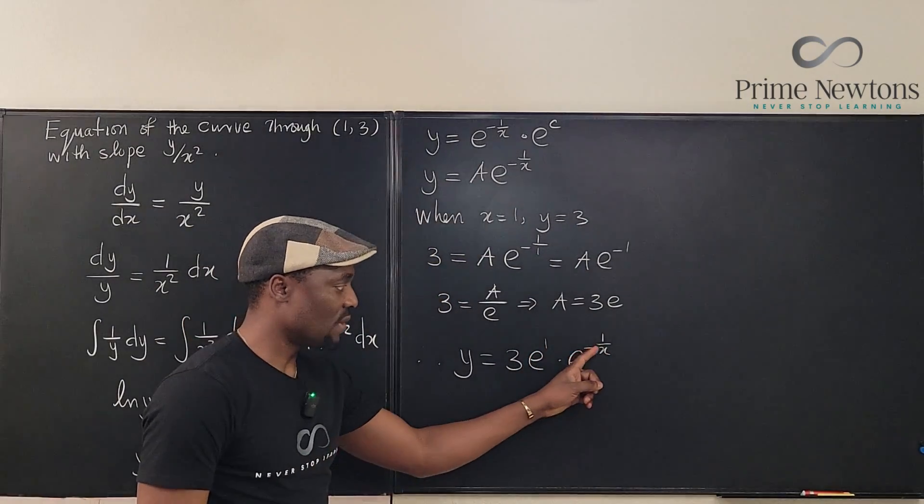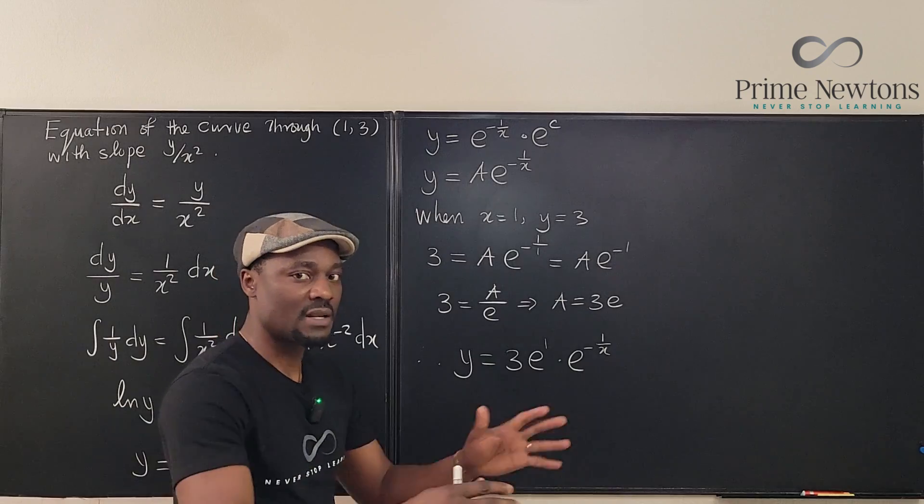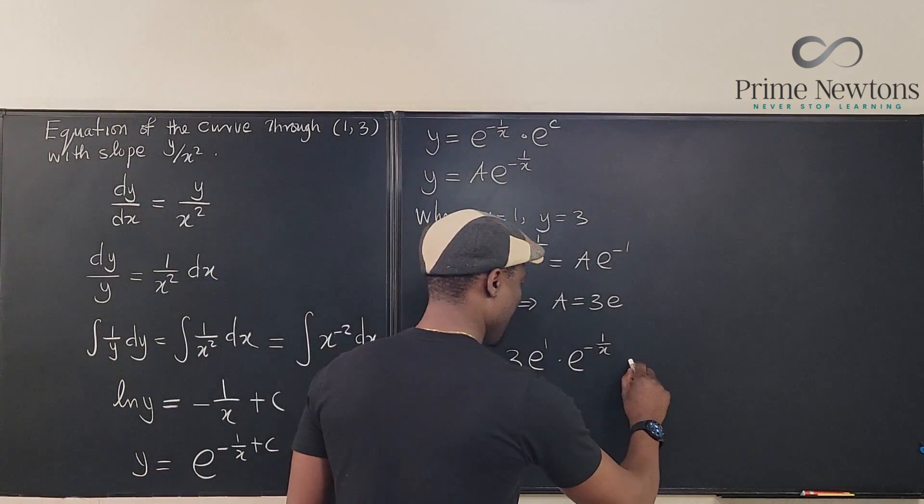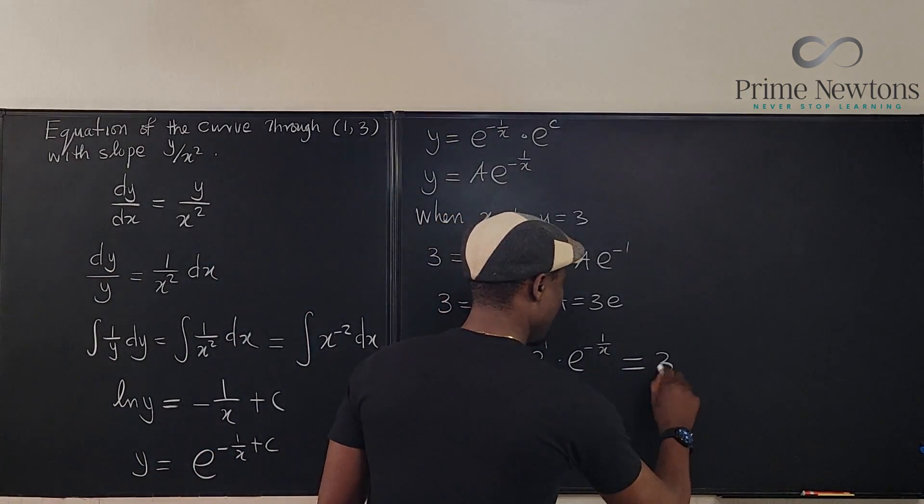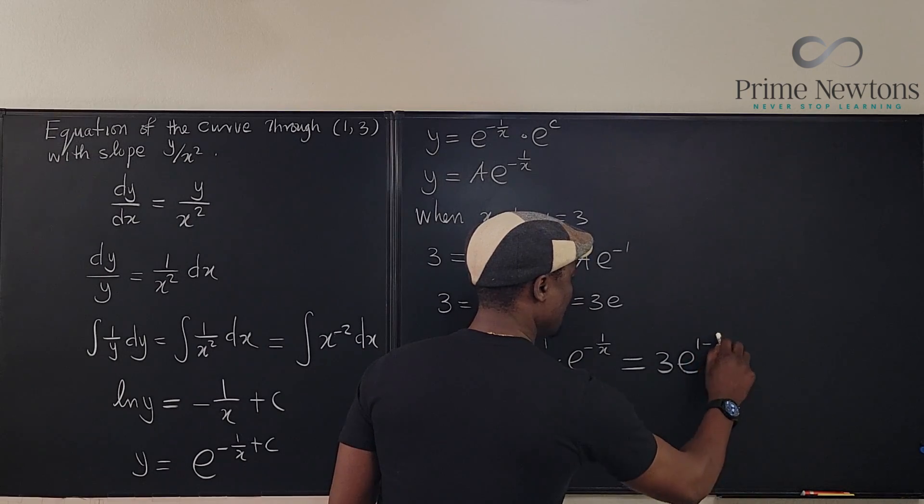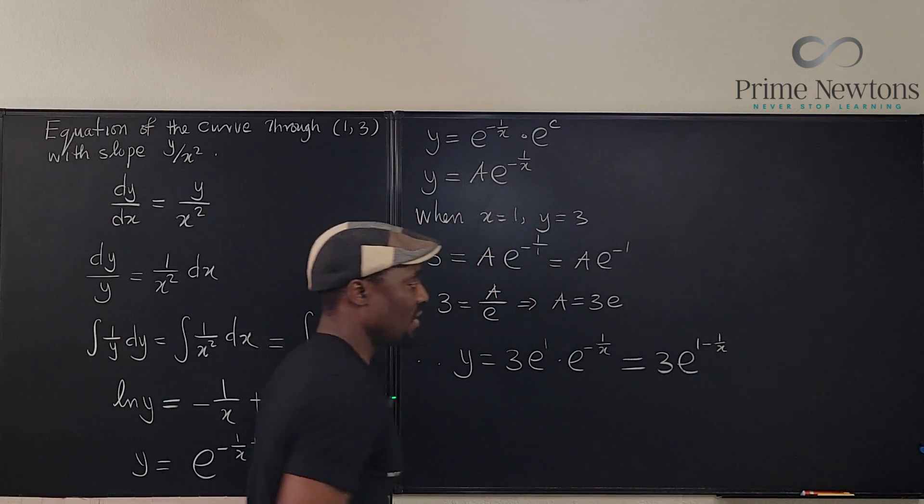We can combine this 1 with this. We're going to end up with 1 minus 1 over x. So, this is equal to 3e to the 1 minus 1 over x. Now,